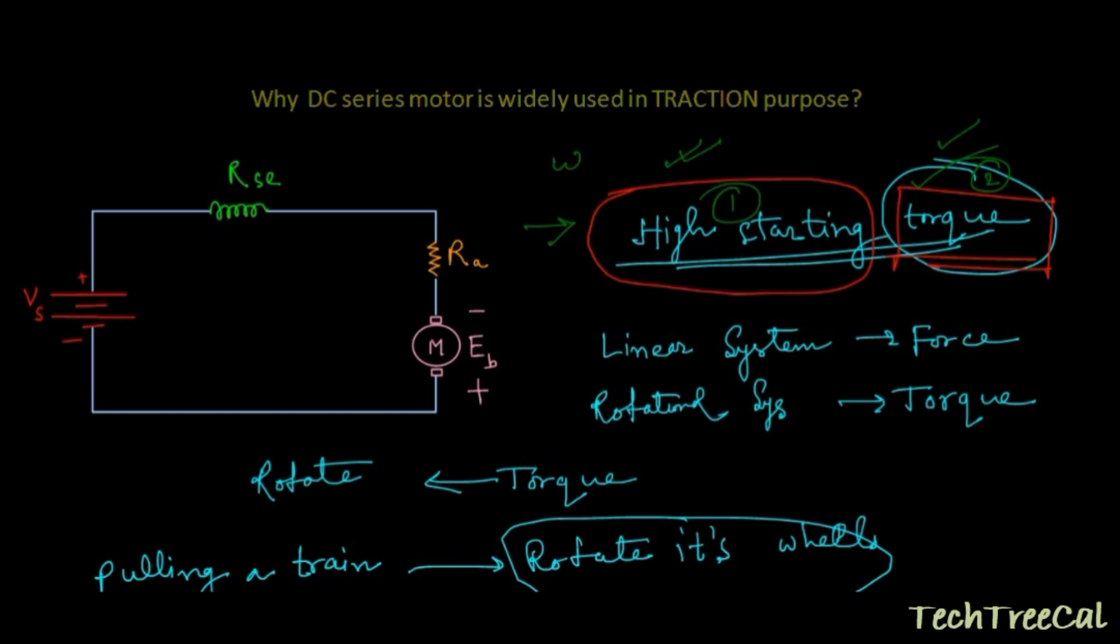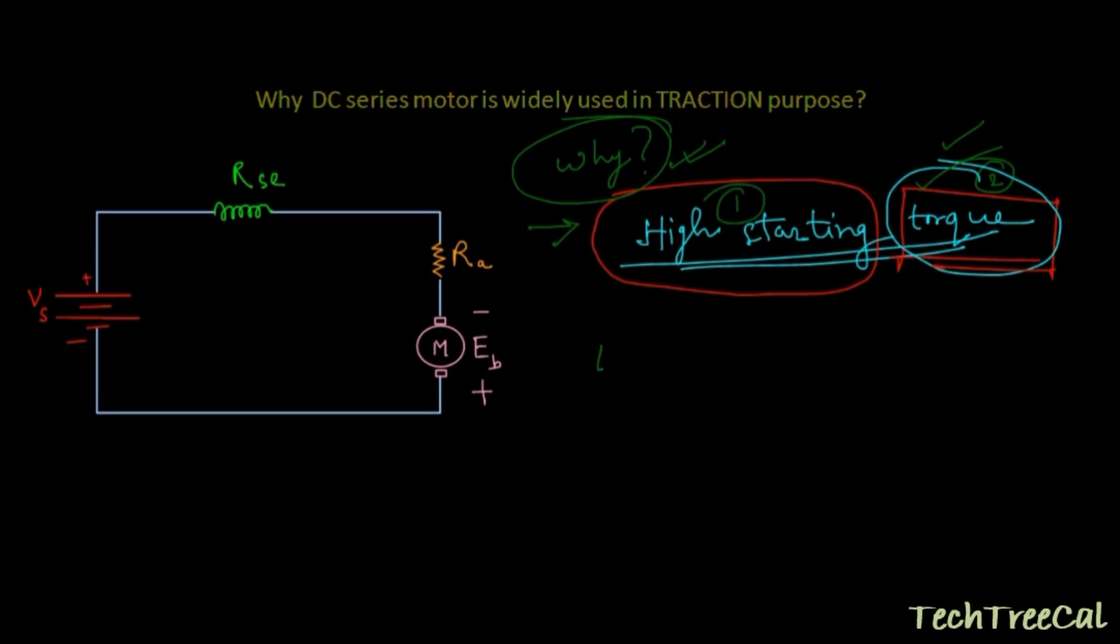Now next part comes: why DC series motor is capable of providing this kind of high amount of torque? Let us see. In torque equation we know torque is equal to φ into Ia. Now Ia is the armature current which is passing through the armature of the DC motor.